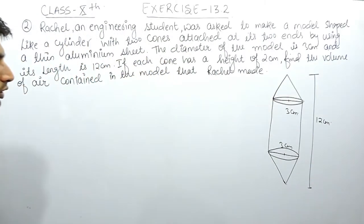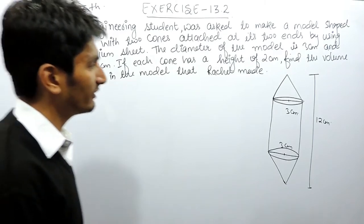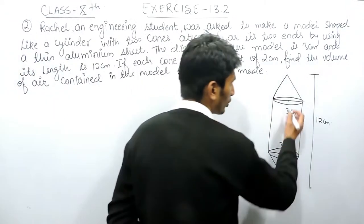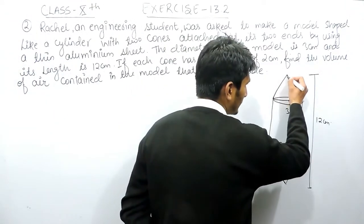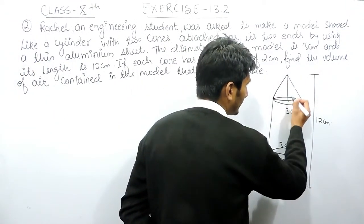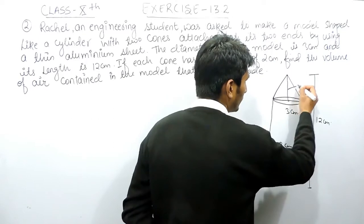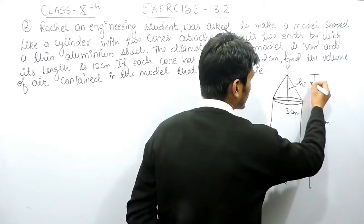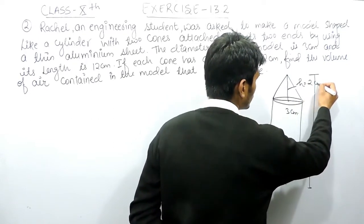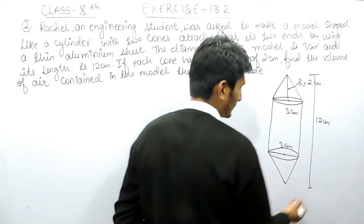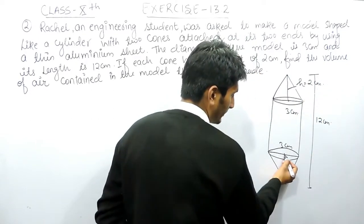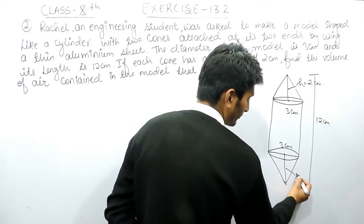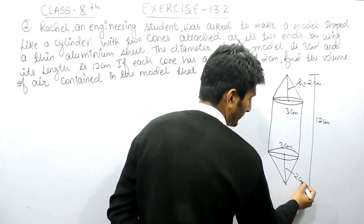The height of the cone is given as 2 cm — that is the perpendicular height, 2 cm. The same will be for the other cone as well — it will also be 2 cm.